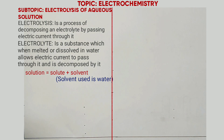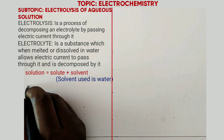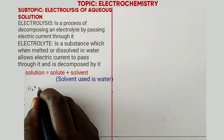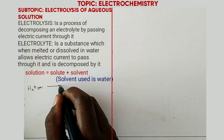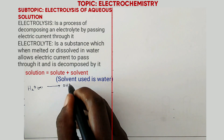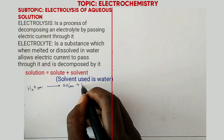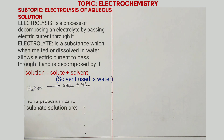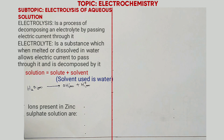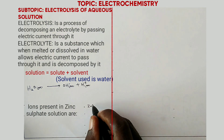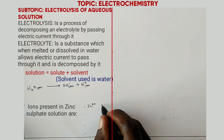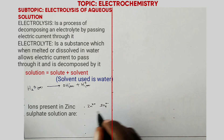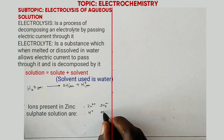In solution, water ionizes as shown: H₂O(aq) → OH⁻(aq) + H⁺(aq). Any solution must always contain hydrogen ions and hydroxide ions. For example, the ions present in zinc sulfate solution are: zinc ions and sulfate ions from the solute, and hydrogen ions and hydroxide ions from the water.